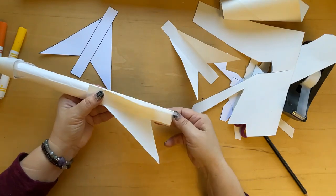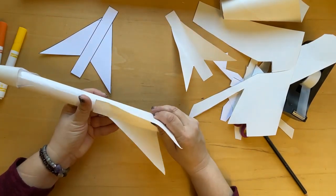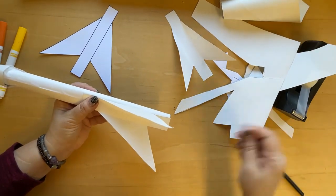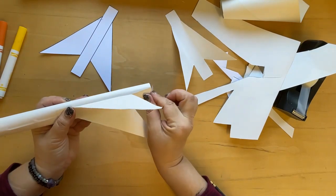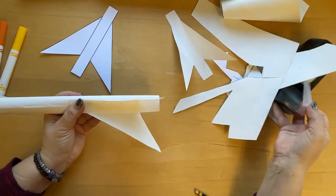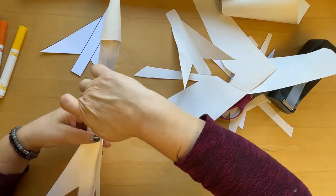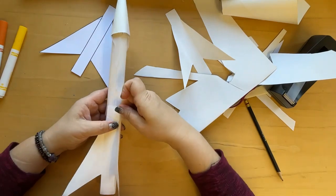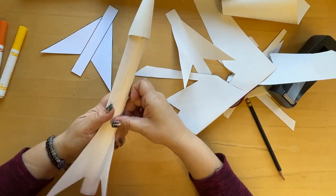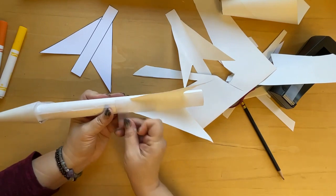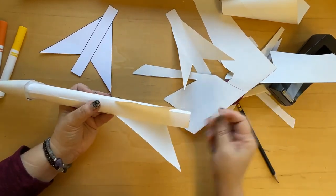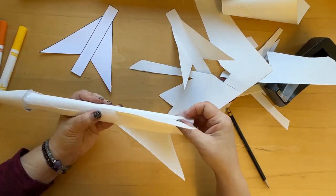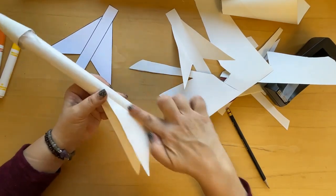Put one on the seam, the seam here. Right in the middle, as close to the middle as you can get it. You can tape it underneath, on top, and around. And then you'll tape each of these sides down.